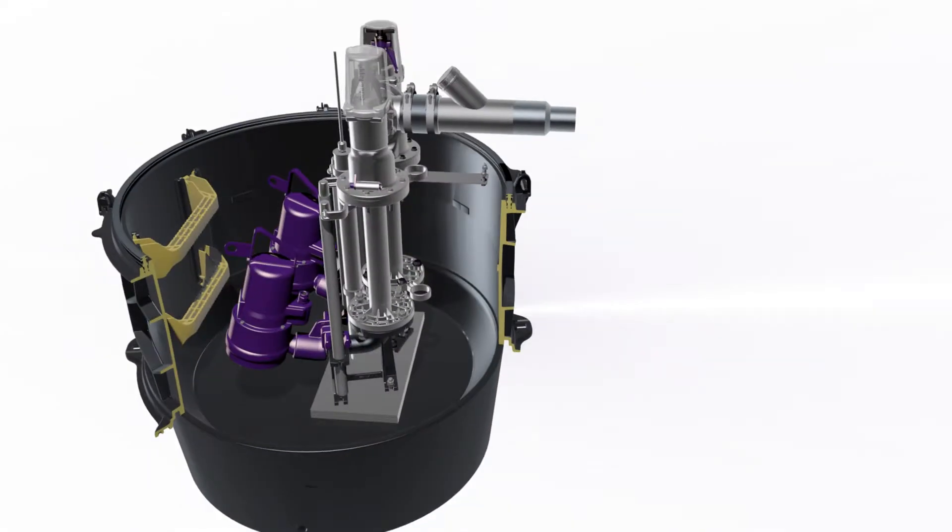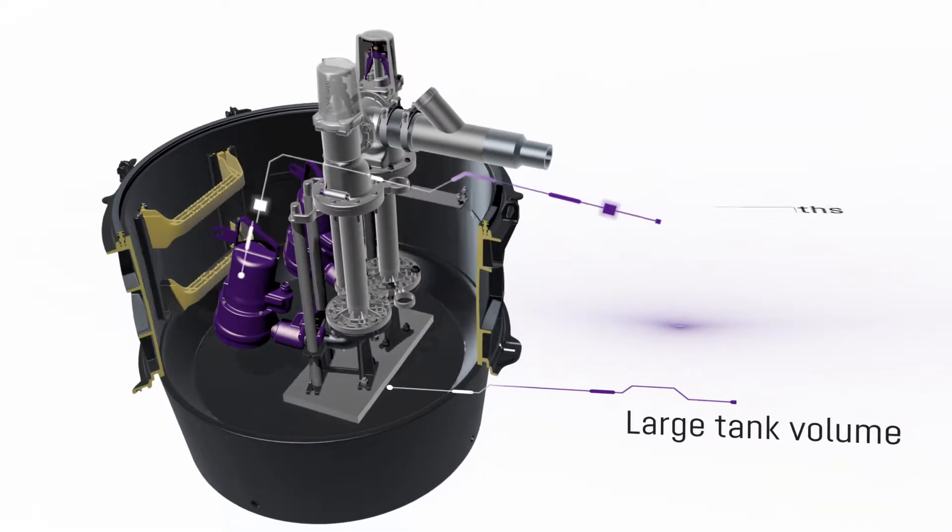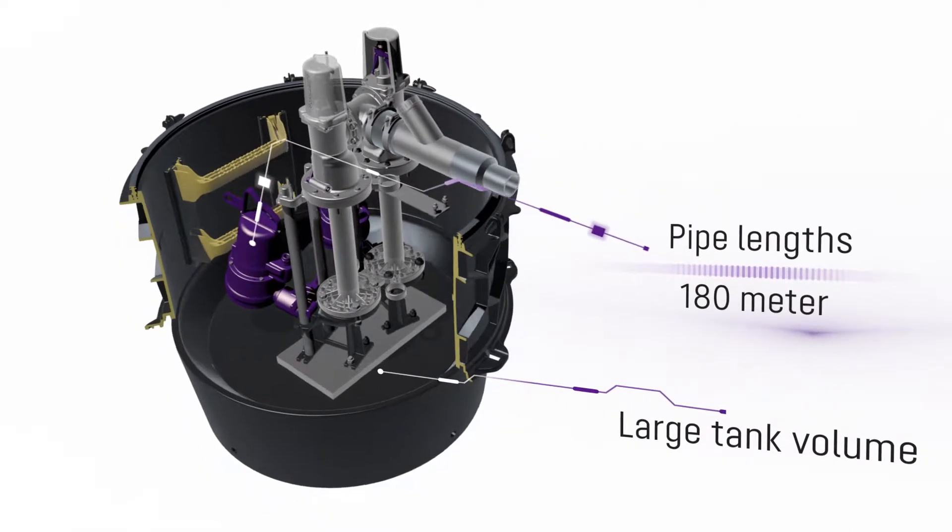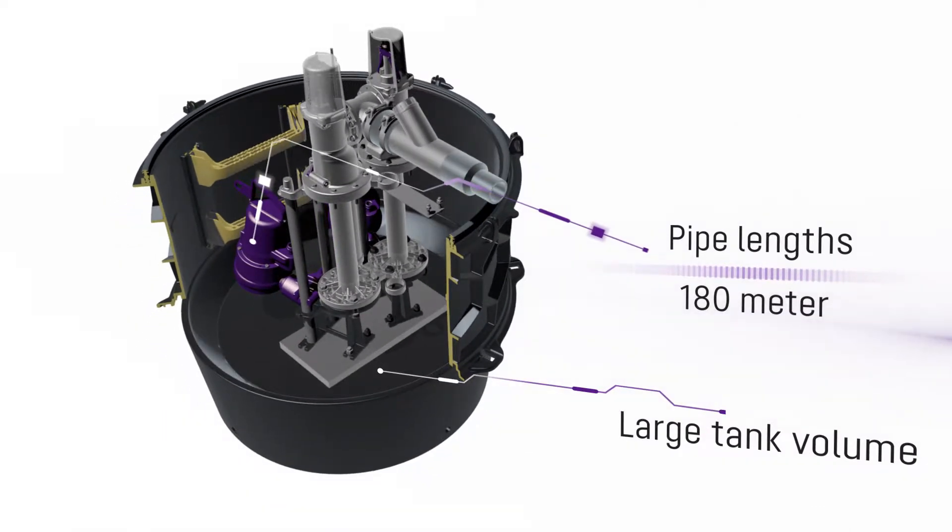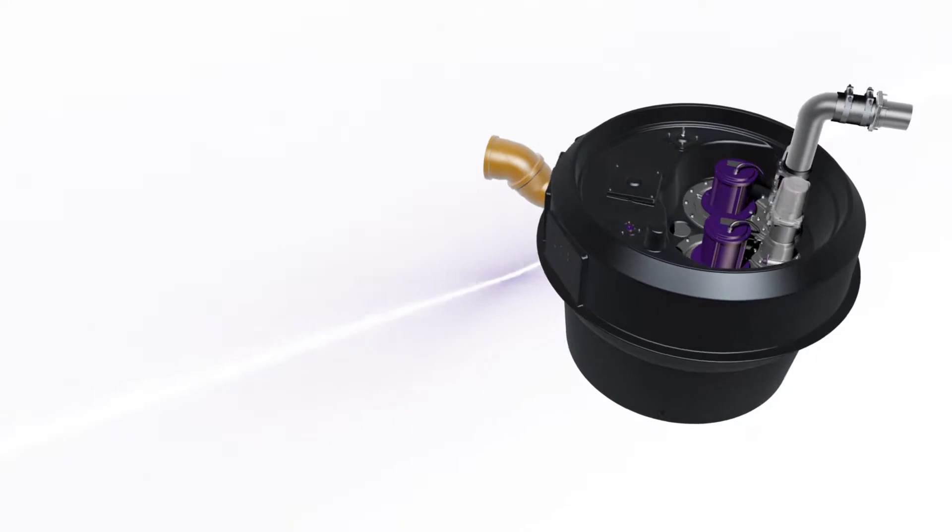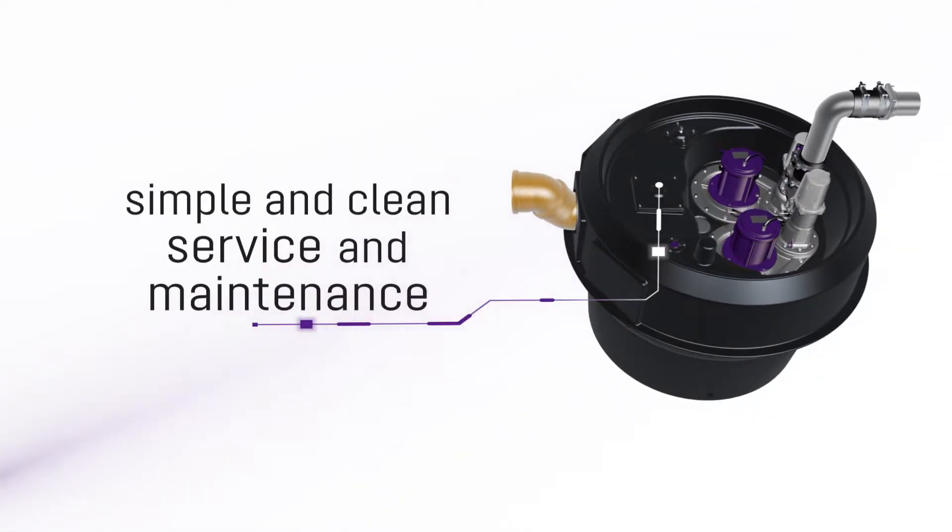The wet system benefits from a large tank volume and is suitable for pressure pipe lengths up to 180 meters. The dry system offers simple and clean service and maintenance.